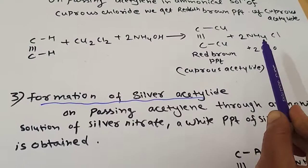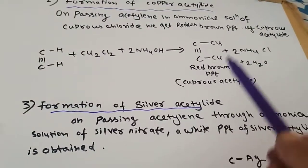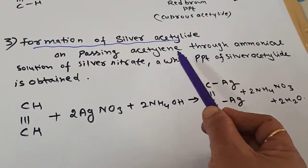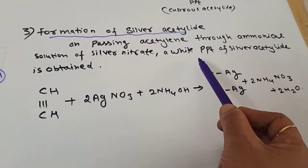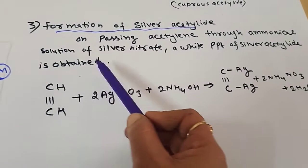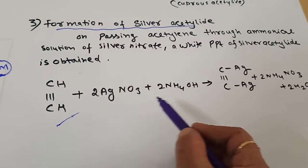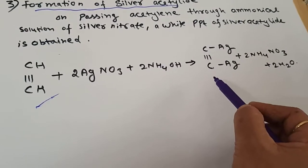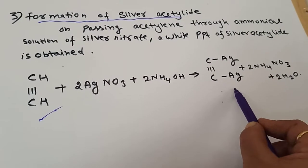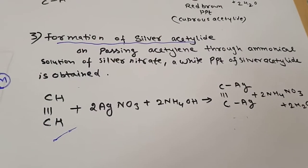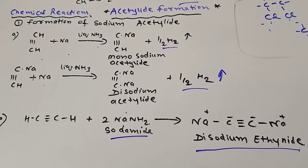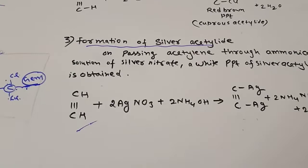For silver acetylide formation: when acetylene is passed through an ammoniacal solution of silver nitrate, a white precipitate of silver acetylide is obtained, with ammonium nitrate and water as byproducts. In summary, there are three types of acetylide formation from alkynes: first, sodium acetylide; second, copper acetylide; and third, silver acetylide.